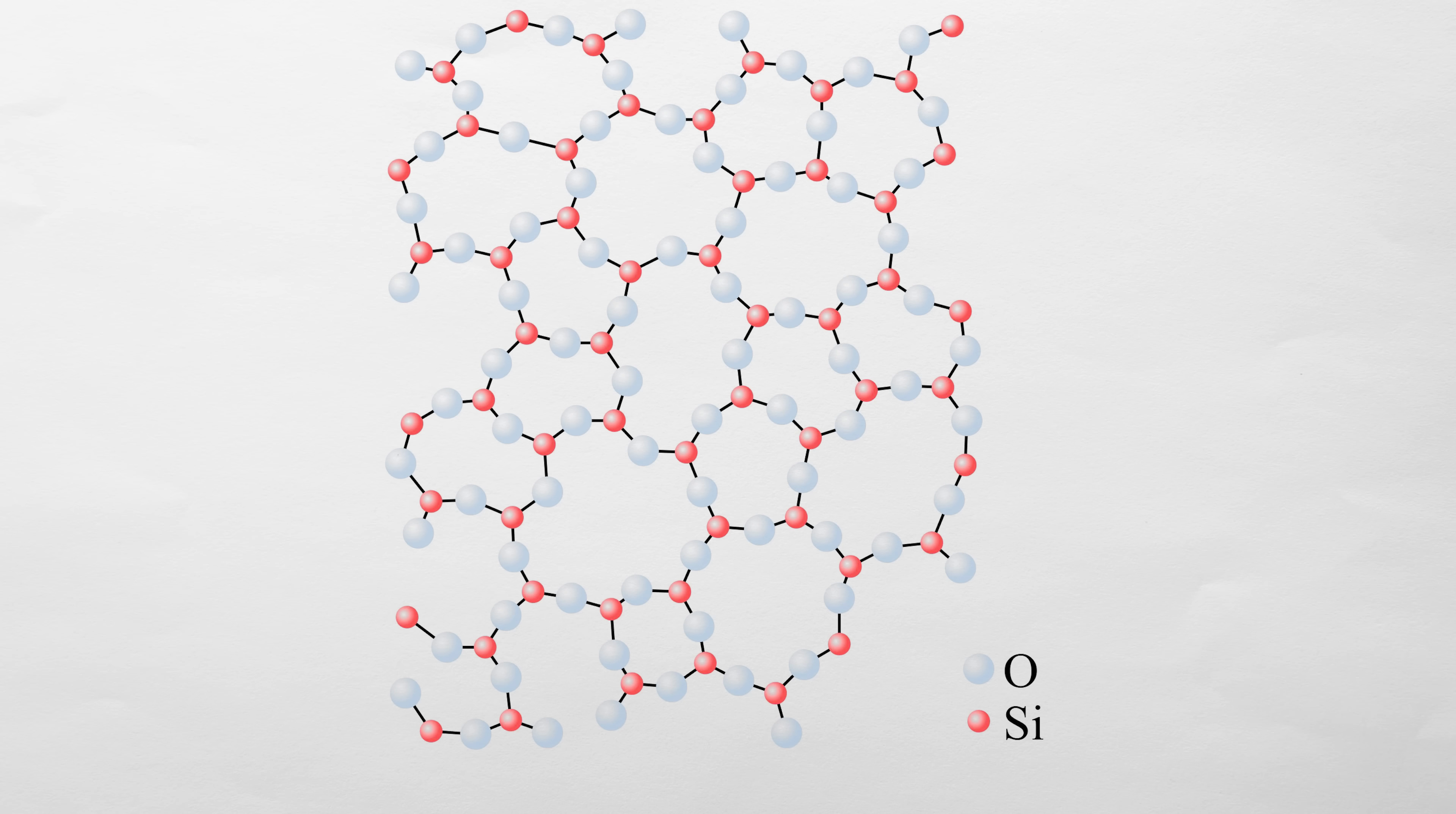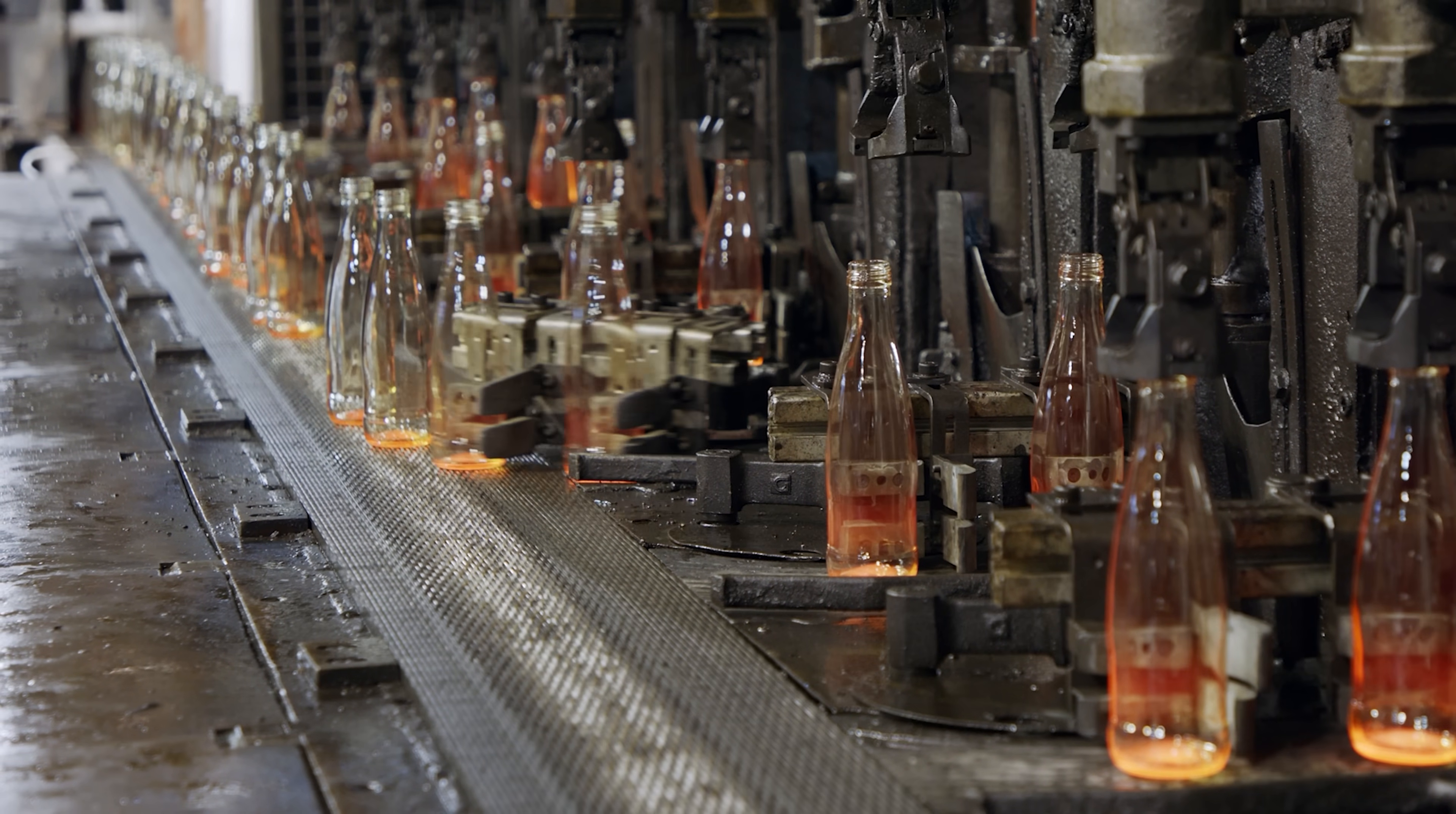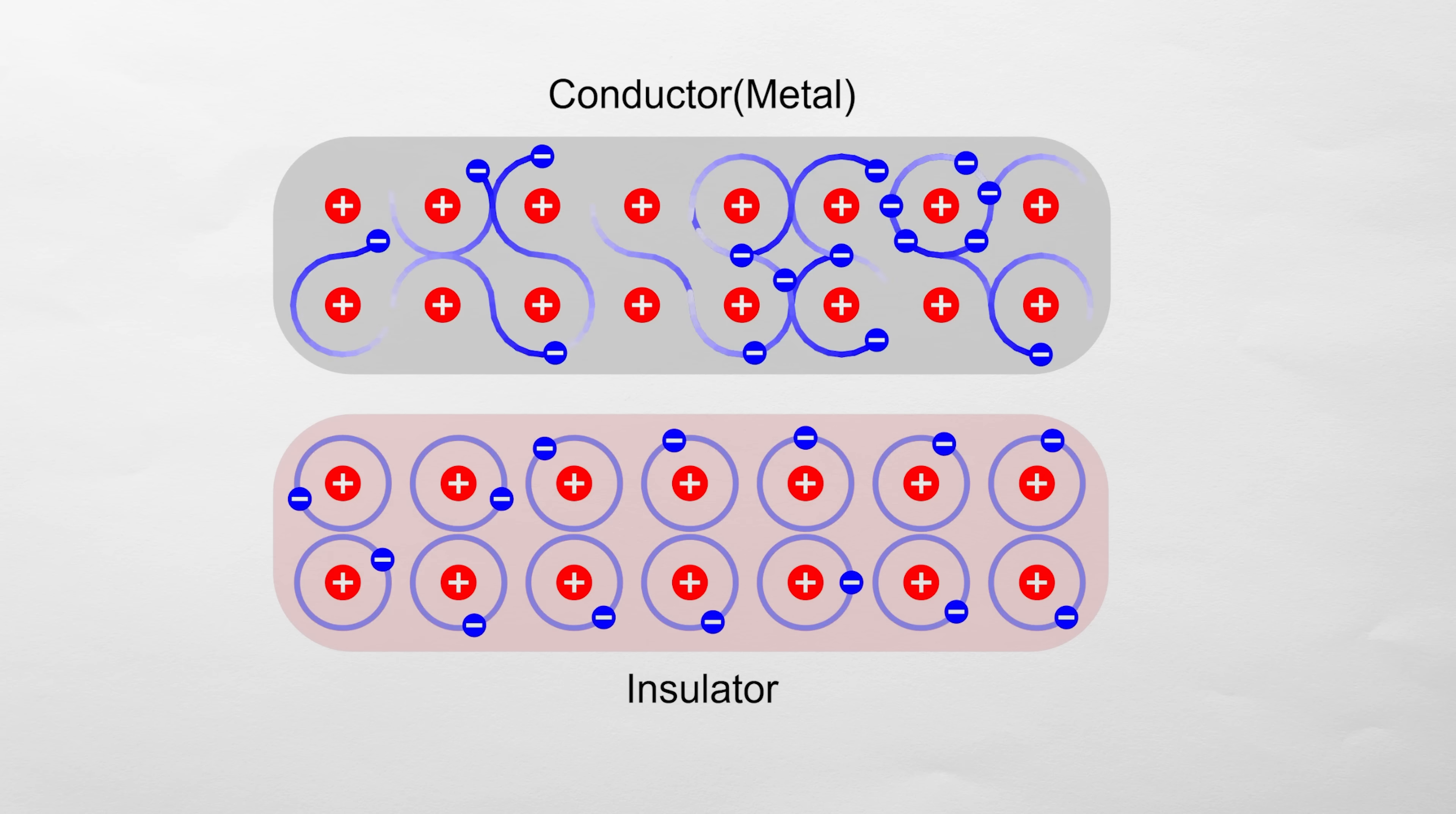Glass is mainly composed of silica with some other components like soda or lime. These additives lower the melting point of silica, making the glass easier to produce and mold. Normally glass is a good insulator because its atomic structure doesn't have free electrons or other charge carriers that can move easily.